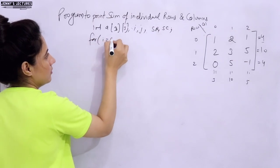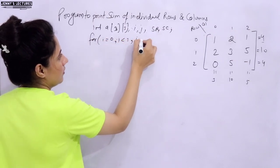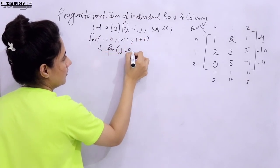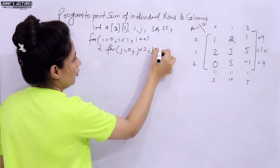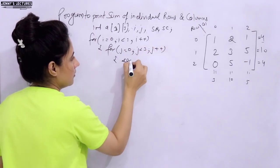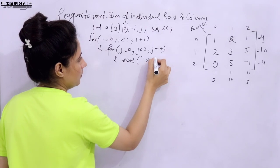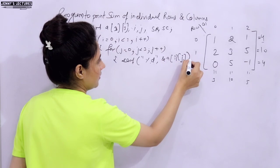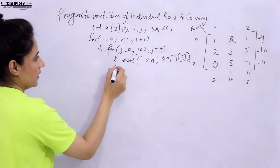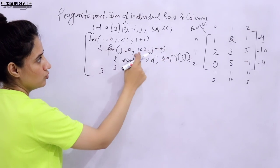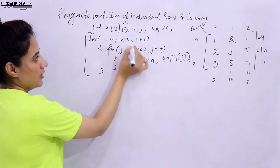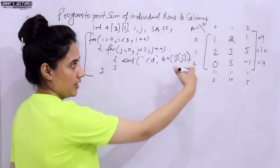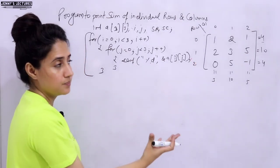Next, we read the matrix using nested loops. I hope everybody is clear with this syntax because we have used it many times. We use scanf with address of A[i][j] to read the 3x3 matrix with 3 rows and 3 columns.